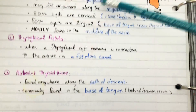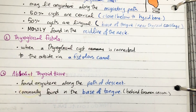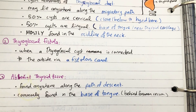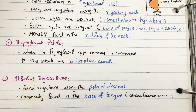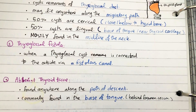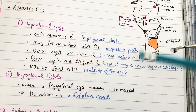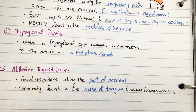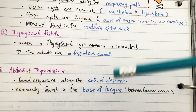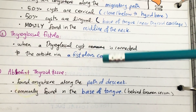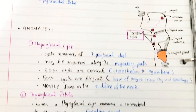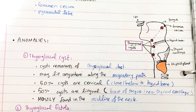There's another anomaly which is aberrant thyroid tissue. This can also be found anywhere along the migratory path of descent, and it is most commonly found at the base of the tongue. And that is it about the development of the thyroid gland.